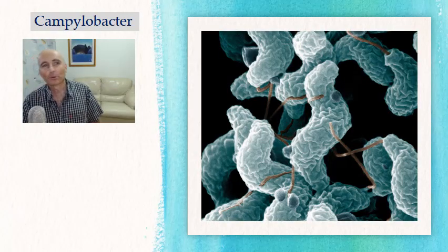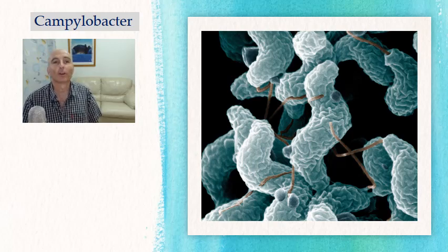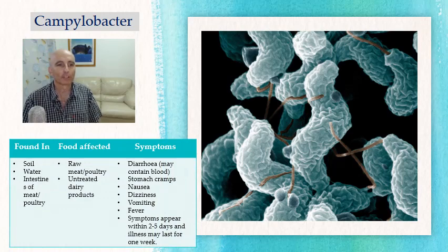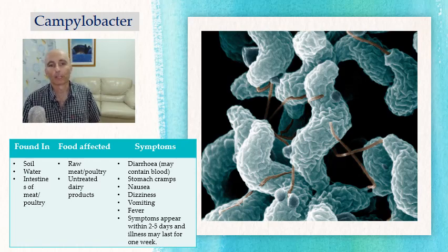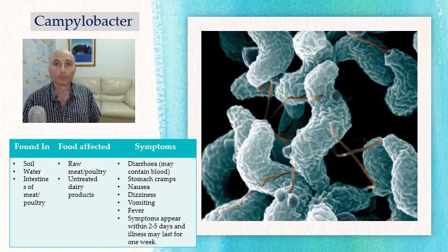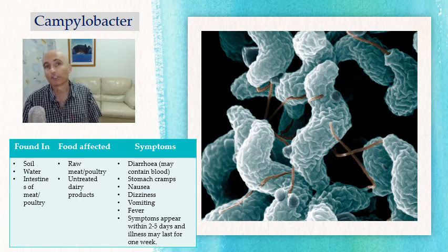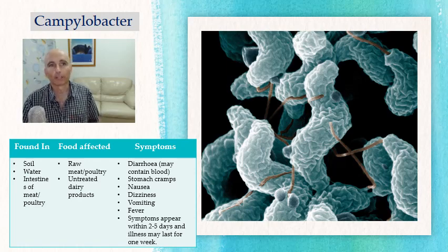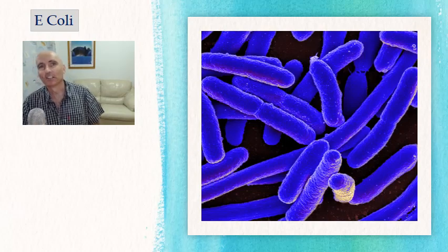The first food poisoning bug is Campylobacter. It has spiral curved rods and prefers an environment low in oxygen, making it anaerobic. It's found in soil and the intestines of meat and poultry. Foods affected are normally meat and untreated dairy products. Symptoms include diarrhea, stomach cramps, nausea, and dizziness, and they can appear and go on for two to five days. Prevention: strict hygiene standards, effective cleaning, and making sure you cook food to above 75 degrees.